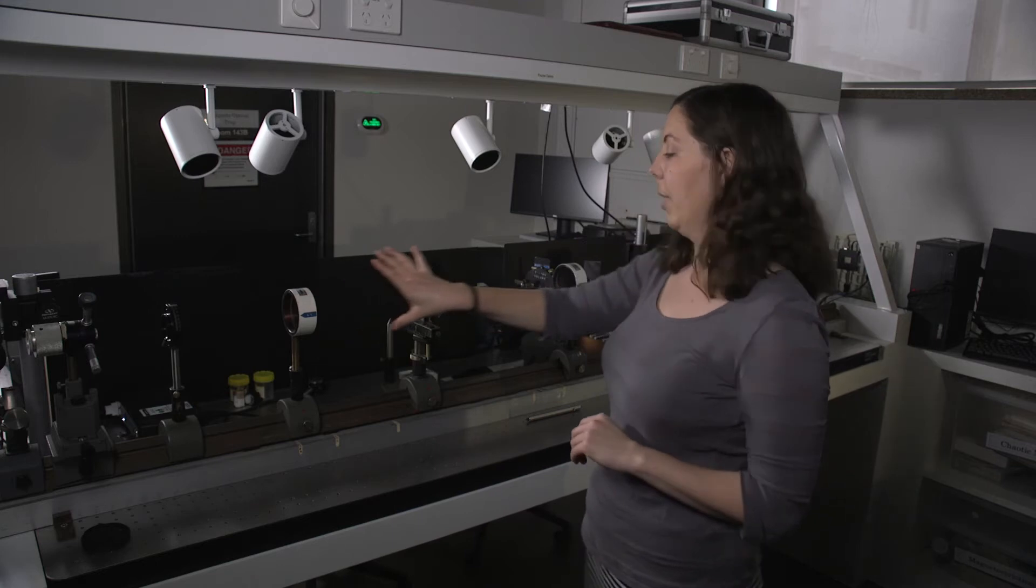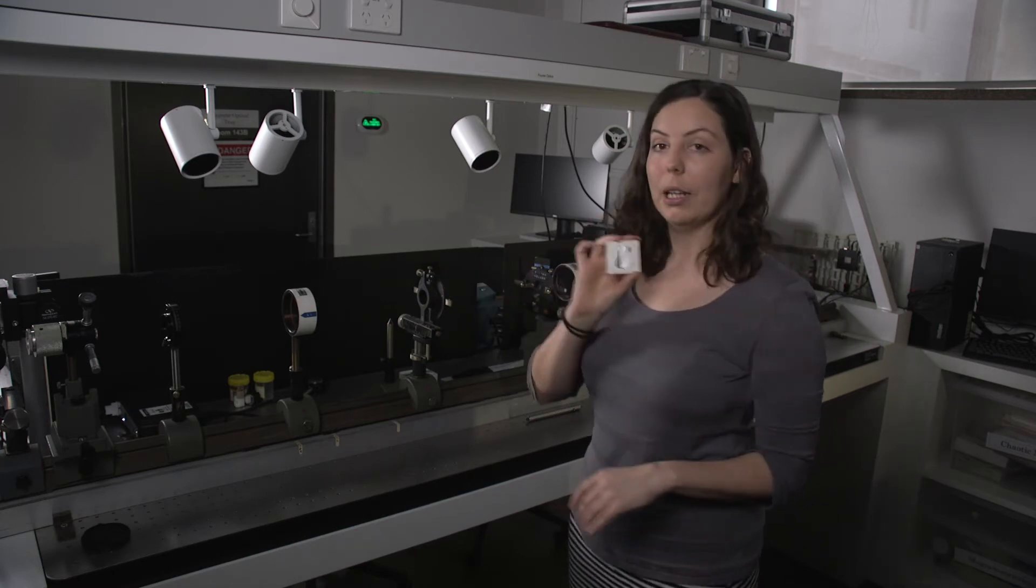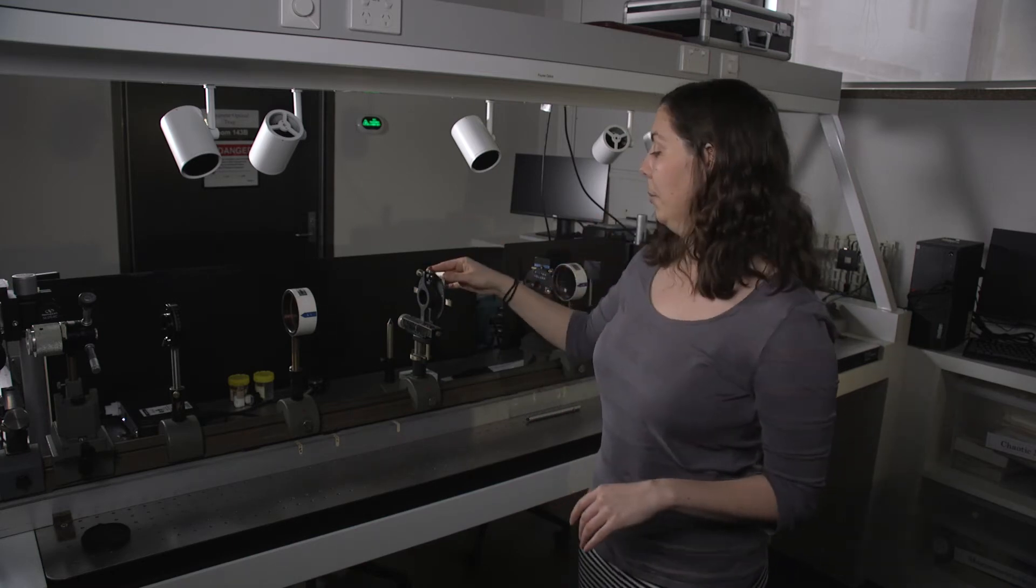At lens one we then collimate the beam. This section of the setup is called the object plane, and it's the plane in which we place our object to be imaged.